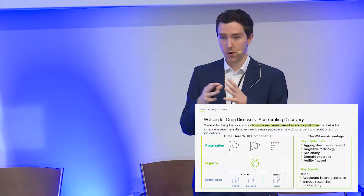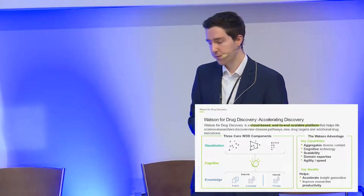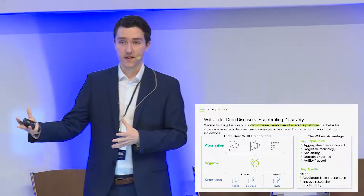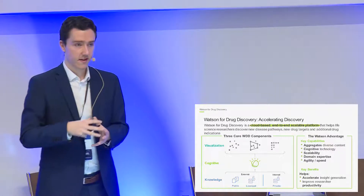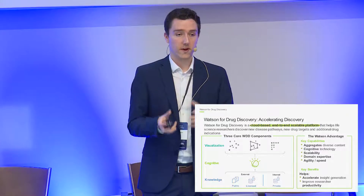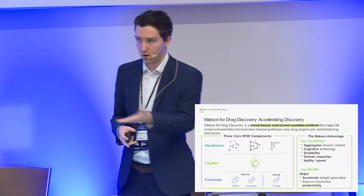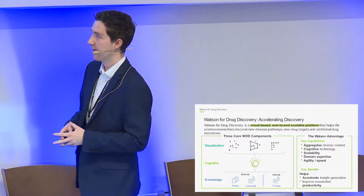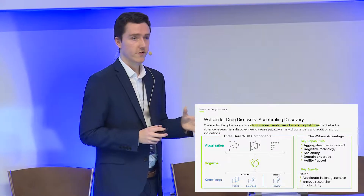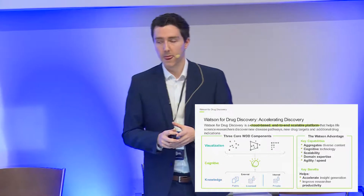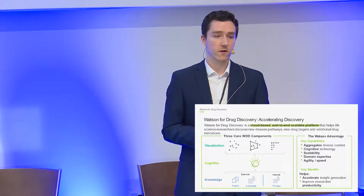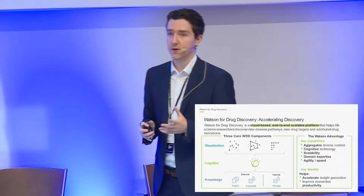Within the tool there's also the ability to make predictions using machine learning capabilities, which essentially learn based on what has been published previously or that exists within the client's data. For example, we worked with Barrow Neurological Institute last year and they wanted to determine new genes related to ALS — a form of motor neuron disease.